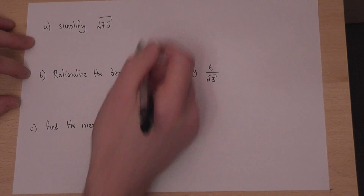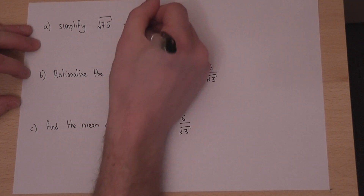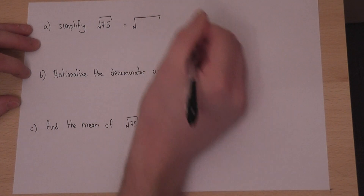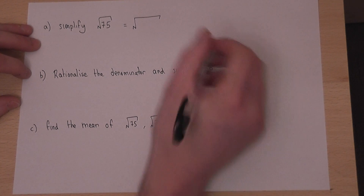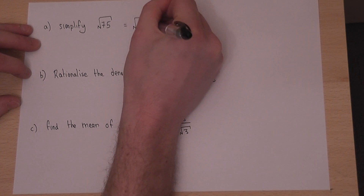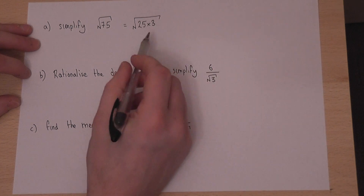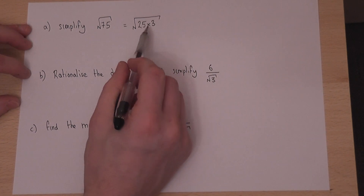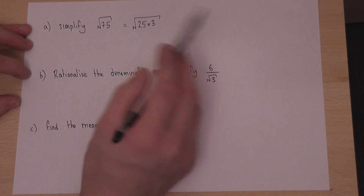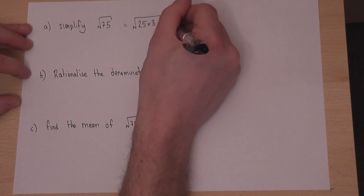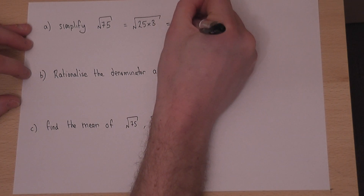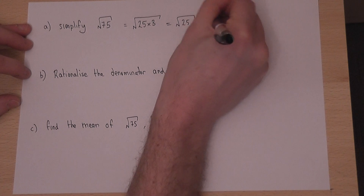To do this we look for the highest square factor of 75, which is 25 times 3. So 25 is the highest square factor which goes into 75. We can then split this into two separate square roots.